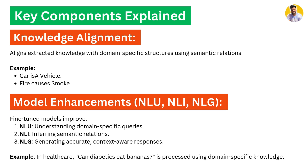Knowledge alignment ensures that when knowledge passed in is not fully correct or has missing words, it aligns your text to a domain-specific structure using semantic relations. For example, spacing issues between sentences are handled by knowledge alignment. Then we have model enhancement components — NLU, NLI, and NLG — which understand domain-specific queries, infer semantic relations, and generate context-relevant, query-coherent answers.